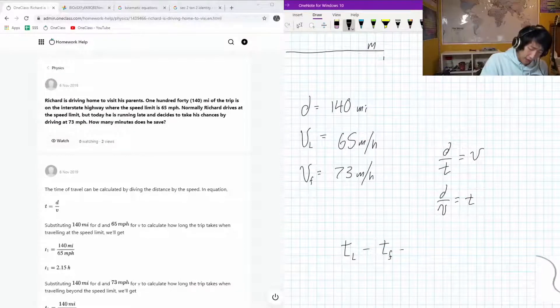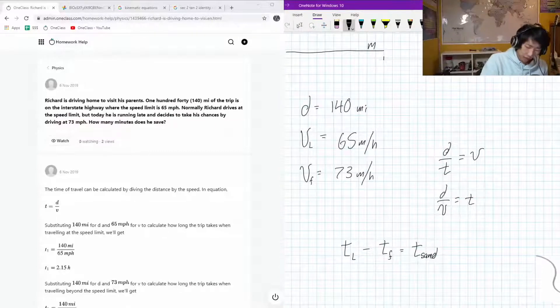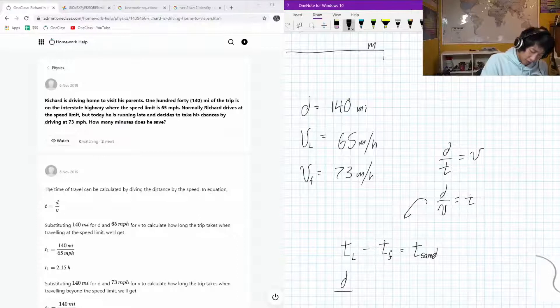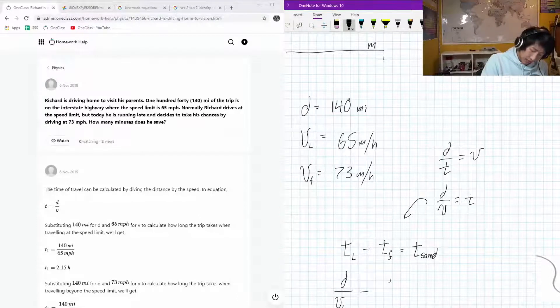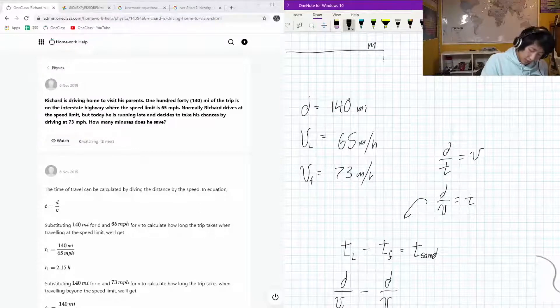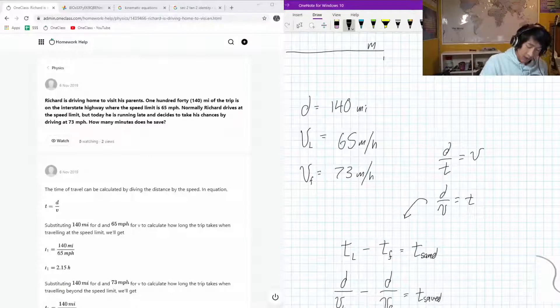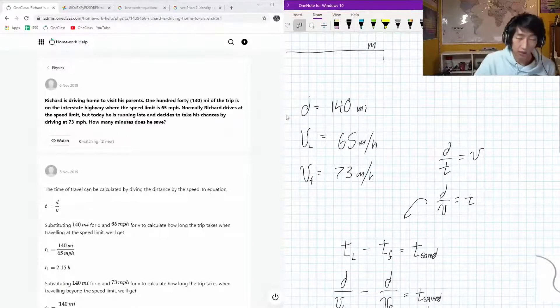That's going to be the time saved. Subbing this relationship in, we know that d over the velocity of the limit minus d over the velocity of going fast, that is going to give us a T saved. The unit cancellation will work out, that's why I mentioned the divided by hours.